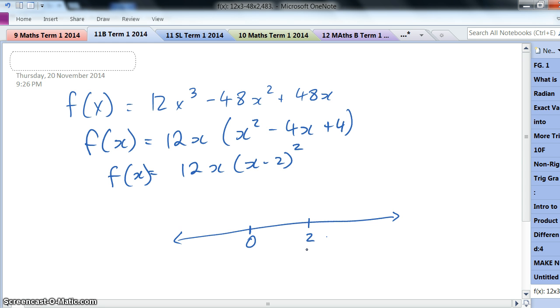Then you just check a number in each region and see what each part, what each expression will look like. If I call the first bit, the 12x, A, and the (x - 2), B, it might give you some idea of what I mean.